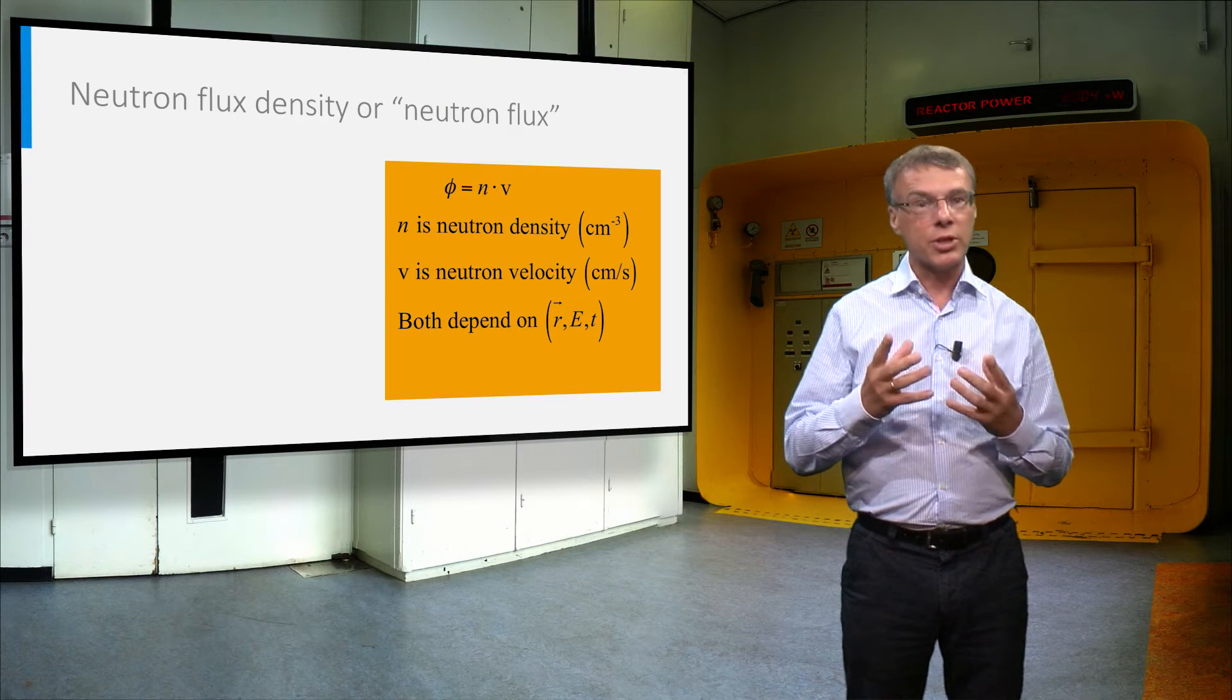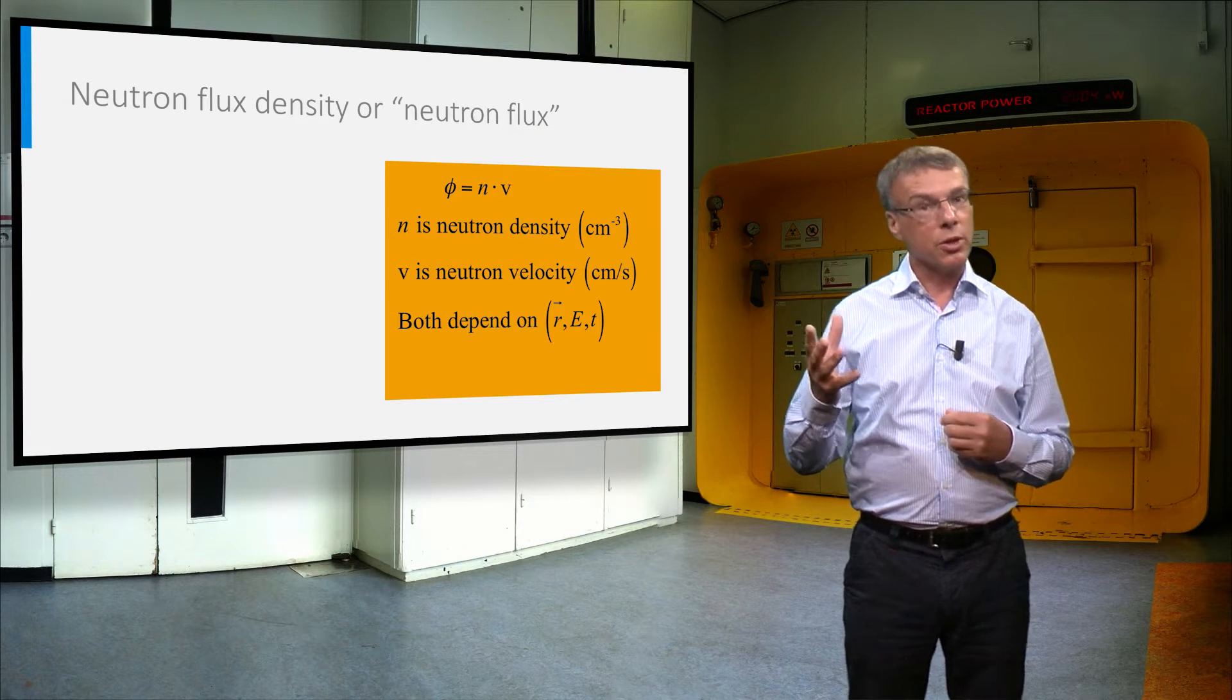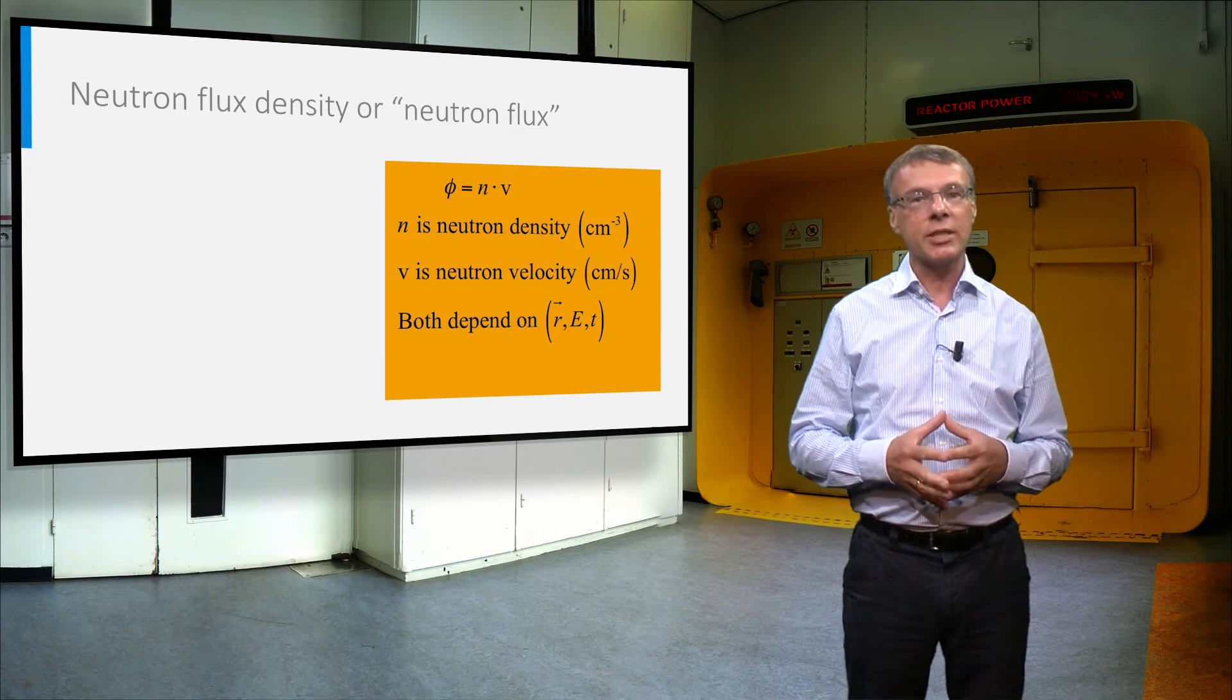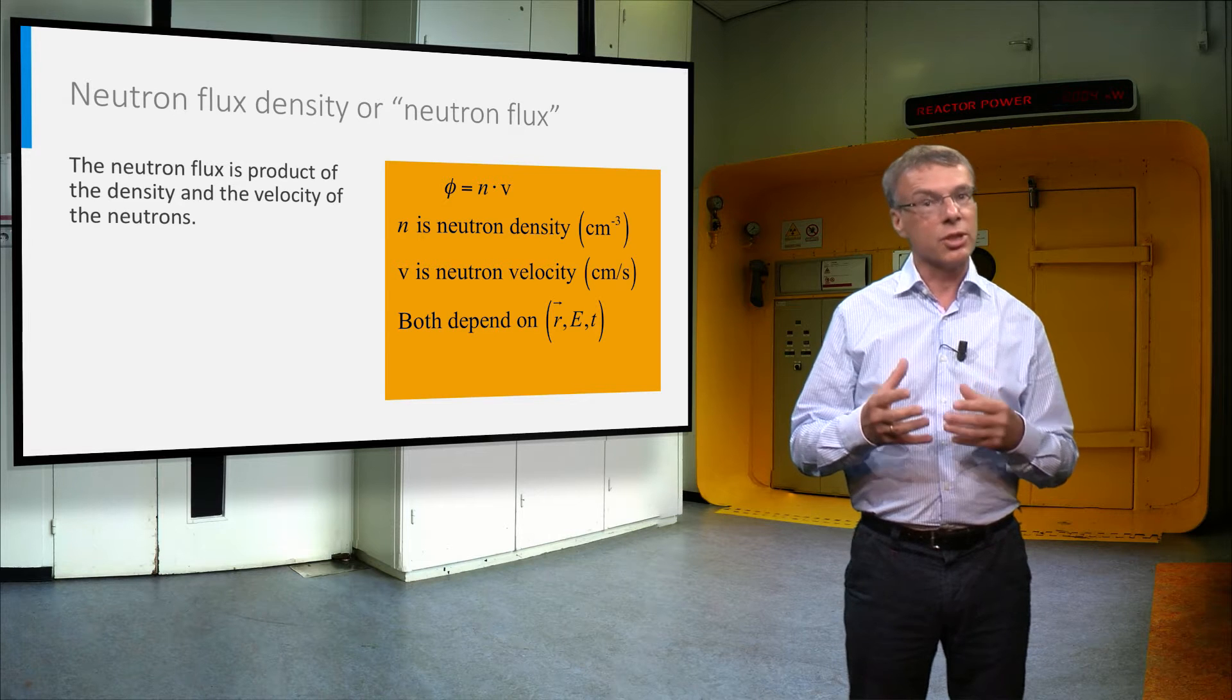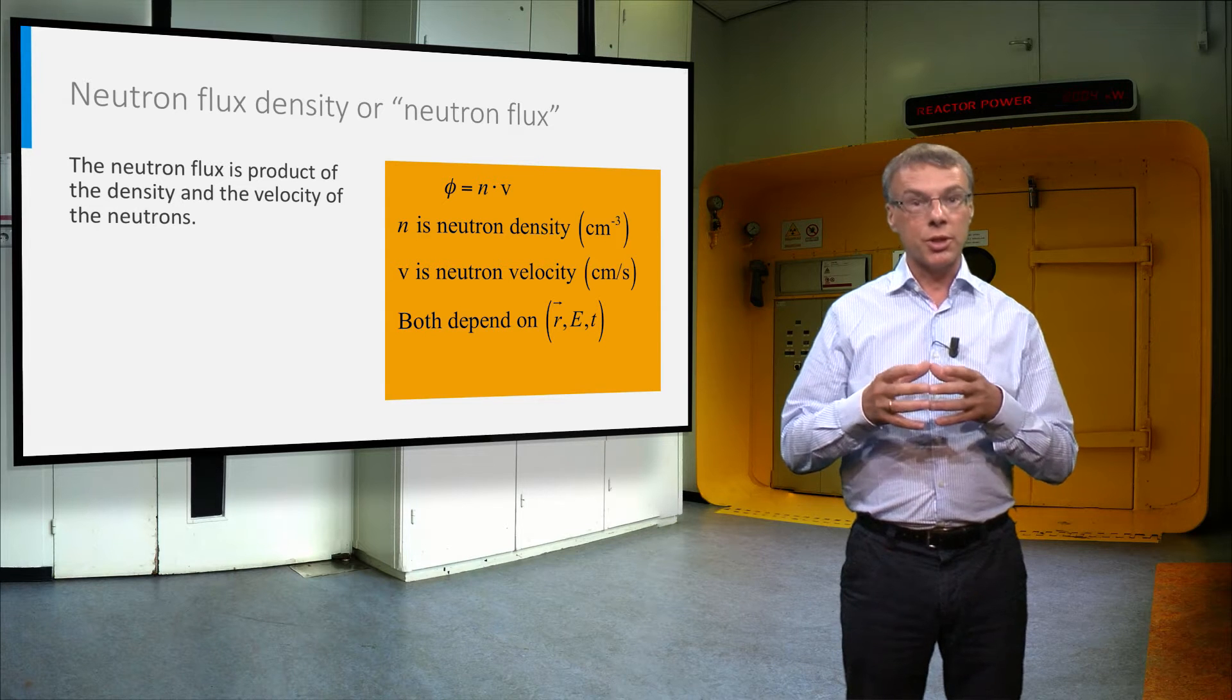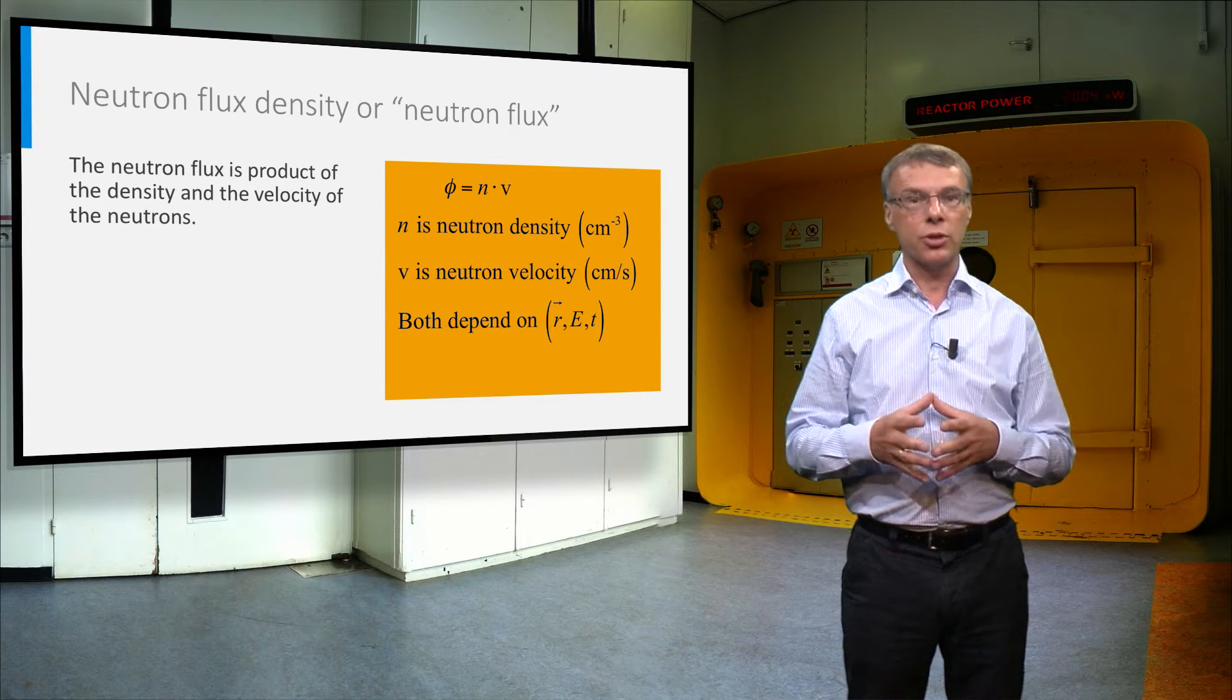First we define the neutron flux density, sometimes briefly called the neutron flux. In contrast to other fields in physics, the neutron flux density is not a vector but a scalar. It is equal to the product of the neutron density and the velocity of the neutrons.